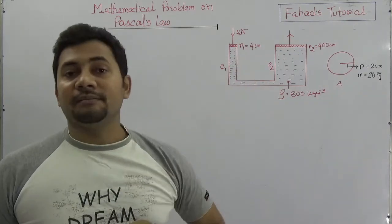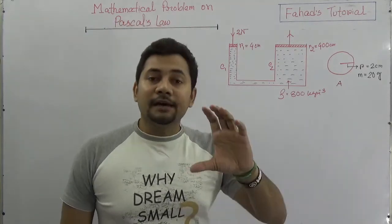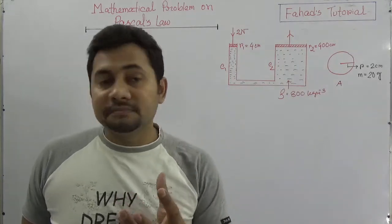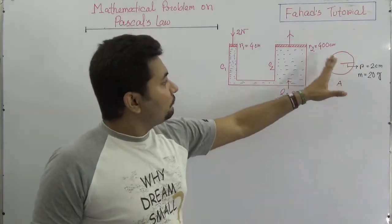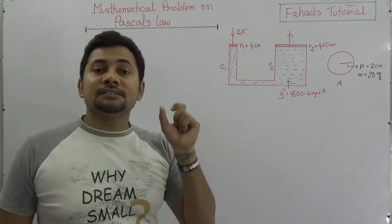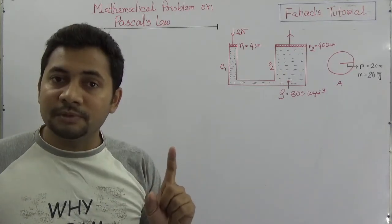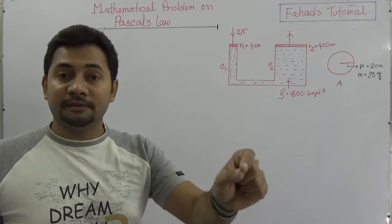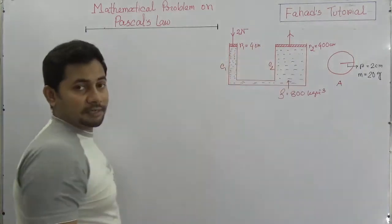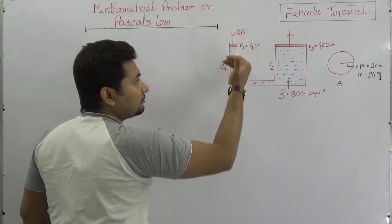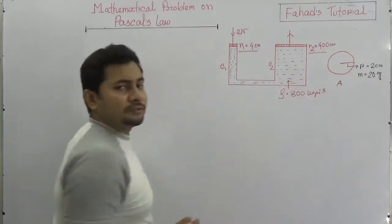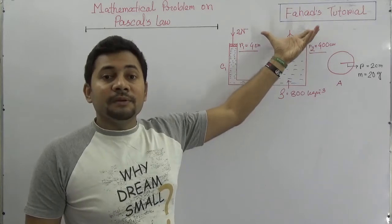When you study Pascal's law, you know the statement and how force multiplication works — this is all about the hydraulic press. This type of figure should be very common in the question paper. We have two cylinders: a smaller one and a bigger one. A force is applied on one side and some force is exerted on the other. The given radii of the cylinders are not the same, so there is some change.